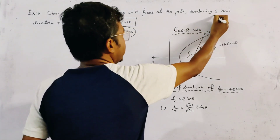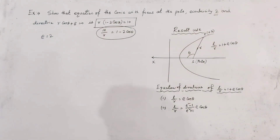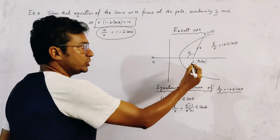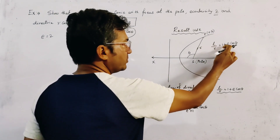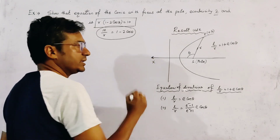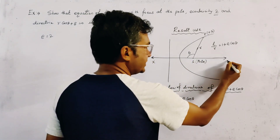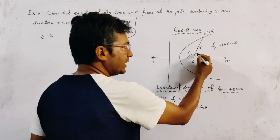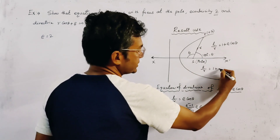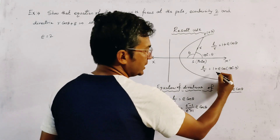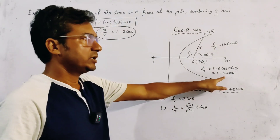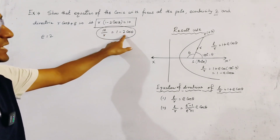Here eccentricity e = 2 and we use two results. The first result is the standard form of a conic with focus as pole: l/r = 1 + e·cosθ, taking the initial line as SX. If we take the initial line as SX dash, we replace θ by 180° - θ, then we get l/r = 1 + e·cos(180° - θ), that is 1 - e·cosθ.